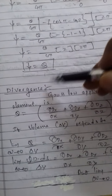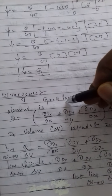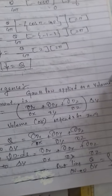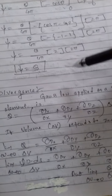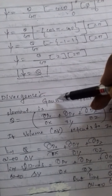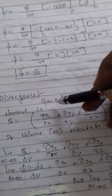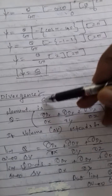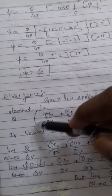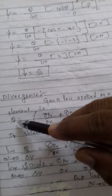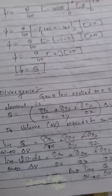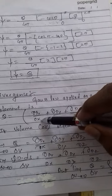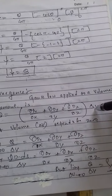An important quantity in electrostatics is the divergence. If Gauss's Law is applied to a volume element or a cube placed at the origin in the Cartesian coordinate system, the charge enclosed by that volume element can be written as ∂Dx/∂x + ∂Dy/∂y + ∂Dz/∂z.